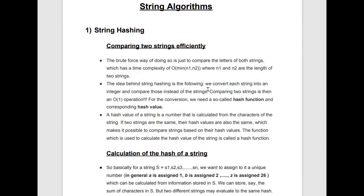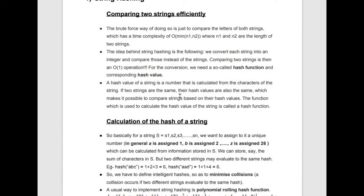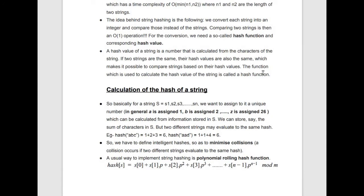The efficient way is: what if we convert each string into an integer and compare those integers instead? Then comparing two strings becomes an O(1) operation, since we compare two integers rather than the full strings. For this conversion, we need a hash function and a corresponding hash value. A hash value of a string is a number calculated from its characters — it is unique for every string, and if two hash values are the same, we say the strings are equal. The function used to calculate this hash value is called a hash function.